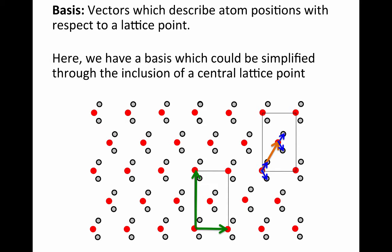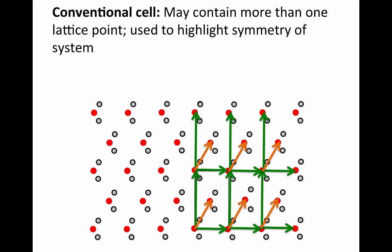You can see that here with this orange vector. Now our basis has gotten significantly simplified. It's a three-atom basis with an oxygen atom at the lattice point, and two additional hydrogens above and below the lattice points as denoted by these blue arrows.